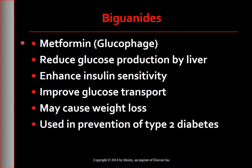The first class is biguanides. The most widely used oral diabetes agent is metformin. The different forms of metformin are Glucophage, which is immediate release, and Glucophage XR, which is extended release. The primary action of metformin is to reduce glucose production by the liver. It also enhances insulin sensitivity at the tissue level and improves glucose transport into the cells.